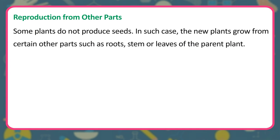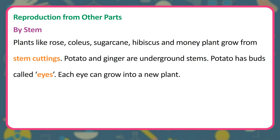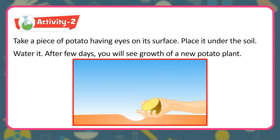Reproduction from other parts: Some plants do not produce seeds. In such cases, new plants grow from certain other parts such as roots, stem or leaves of the parent plant. By stem: Plants like rose, coleus, sugarcane, hibiscus and money plant grow from stem cuttings. Potato and ginger are underground stems. Potato has buds called eyes, and each eye can grow into a new plant. Activity: Take a piece of potato having eyes on its surface, place it under the soil, and water it. After a few days, you will see the growth of a new potato plant.